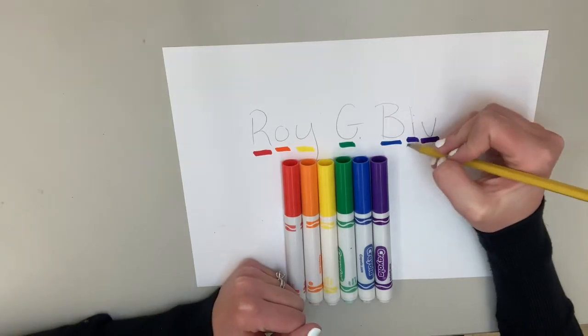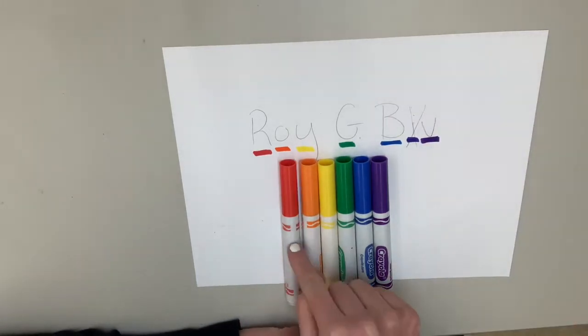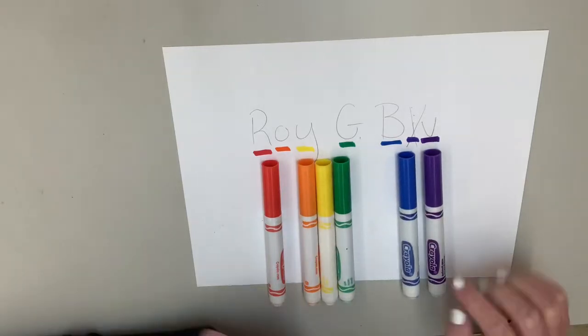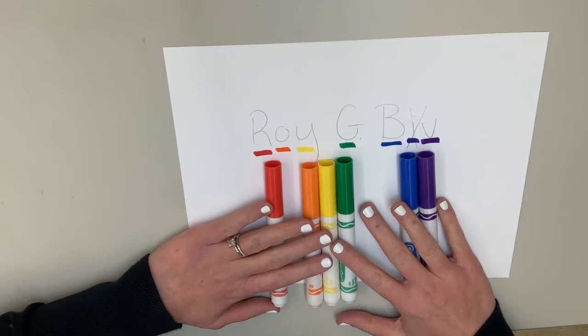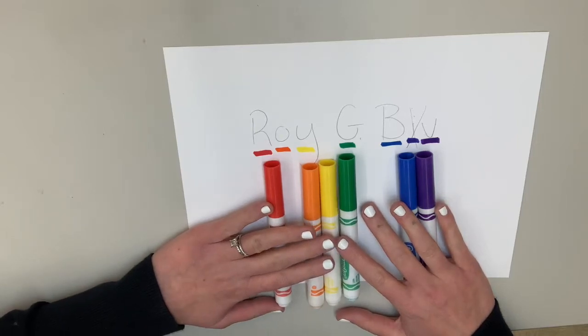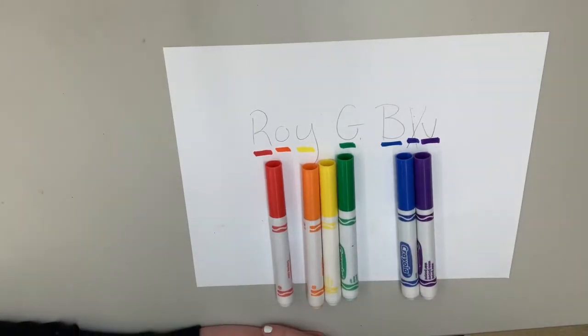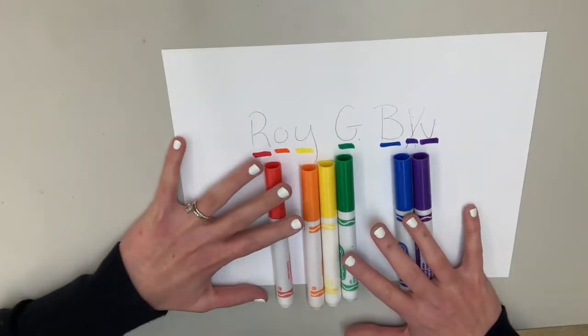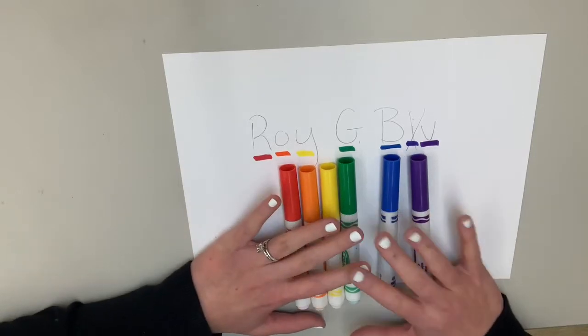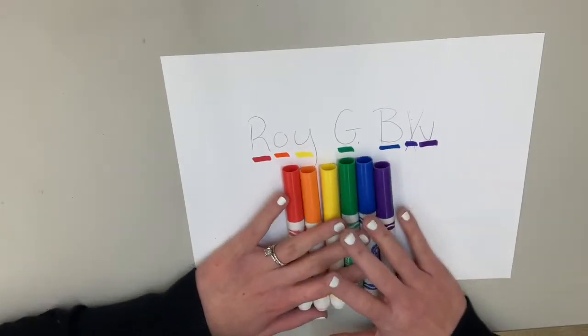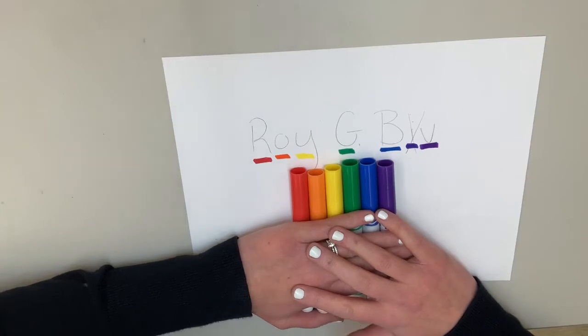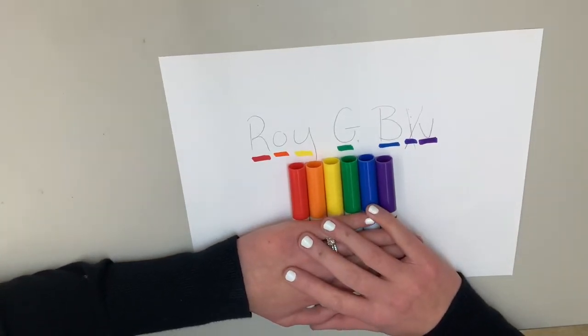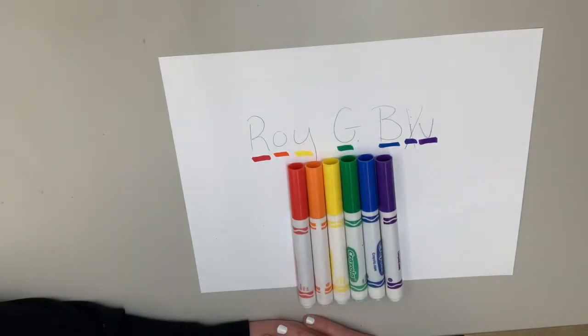And now for our last name, Biv. B stands for blue. So far we have red, orange, yellow, green, and blue. Now, I is an interesting one. I actually stands for indigo, which is kind of like a bluish purple. For today, you're actually not going to need an indigo because indigo shows up on the color wheel, but not the color wheel we're going to be making today.